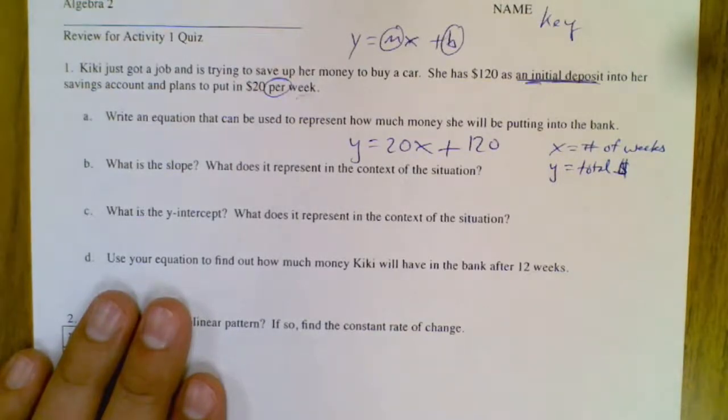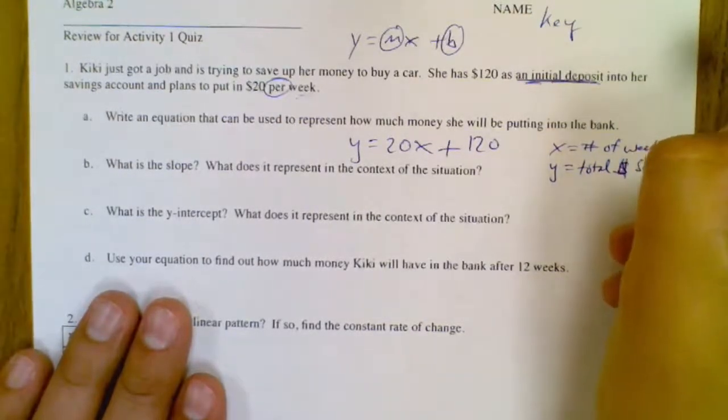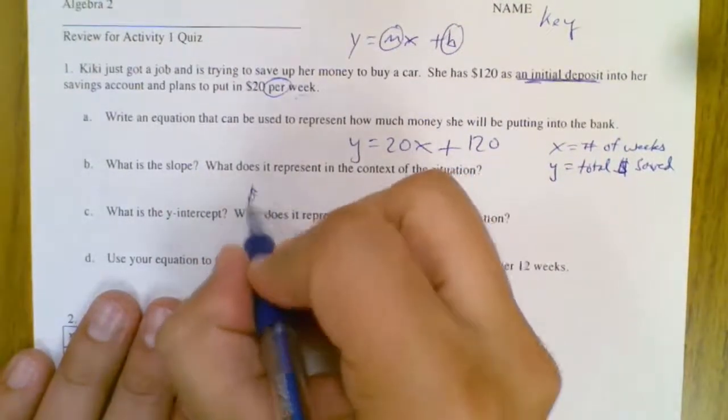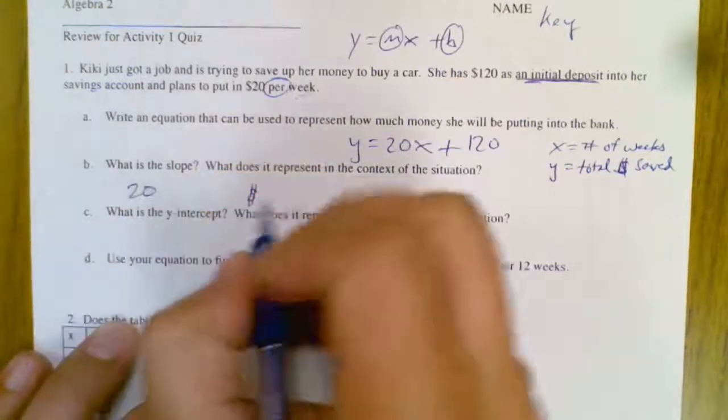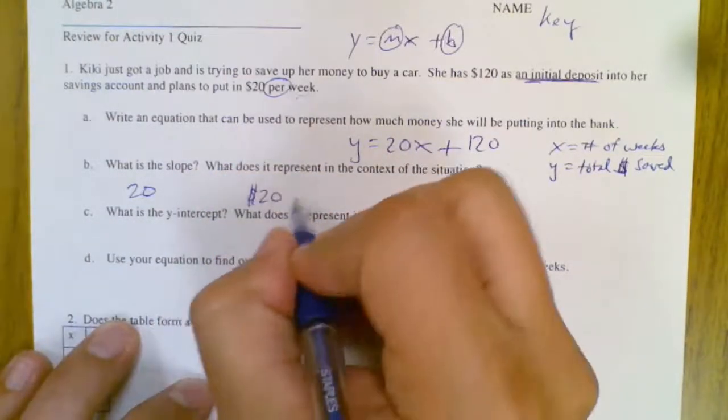So what is the slope? The slope is $20. Well, slope is 20, it represents $20 per week to save in this situation.